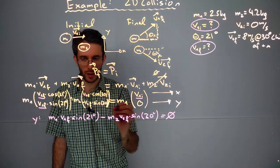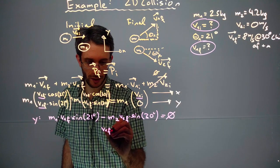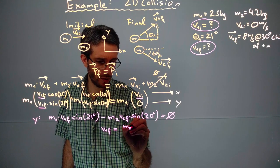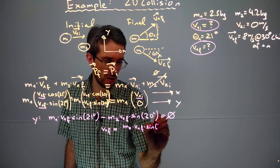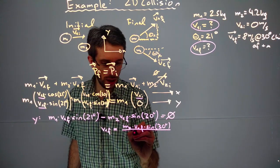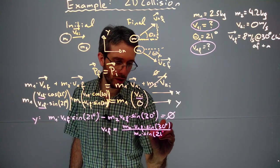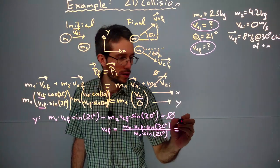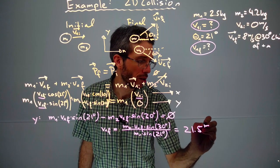If I solve this for v1 final, I get v1 final equals m2 times v2 final times sine 30 degrees divided by m1 times sine 21 degrees, which gives me 21.5 meters per second.